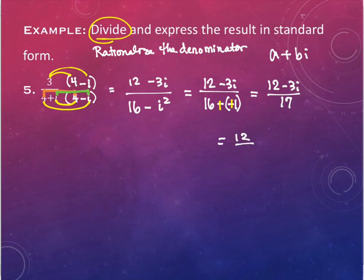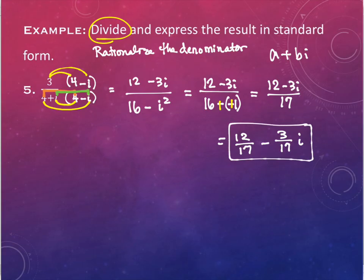The way that we deal with that is we just separate them into two separate fractions each with denominator 17. I expect that MyMathLab is going to ask you to do that. If we do that, this ends up being written as 12 over 17 minus 3 over 17 i. So this is what we're going to consider our standard form.